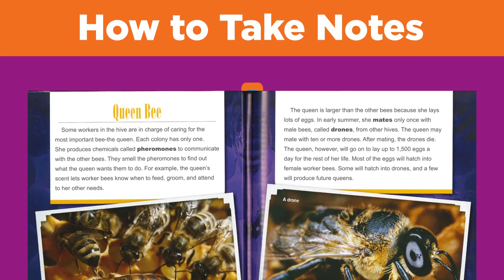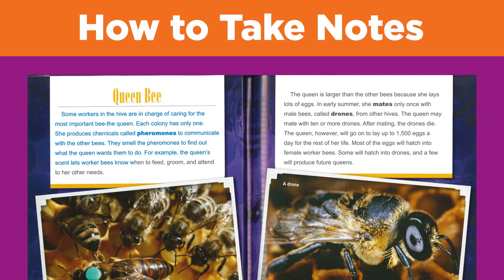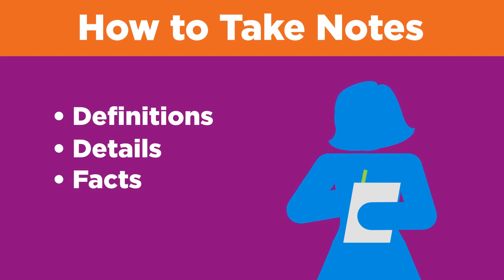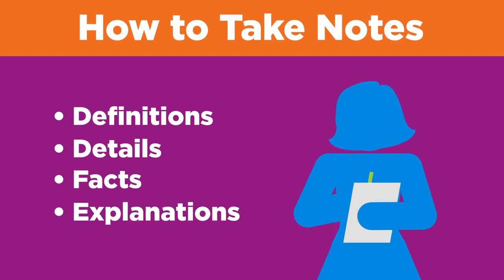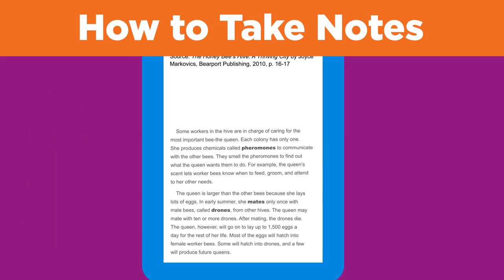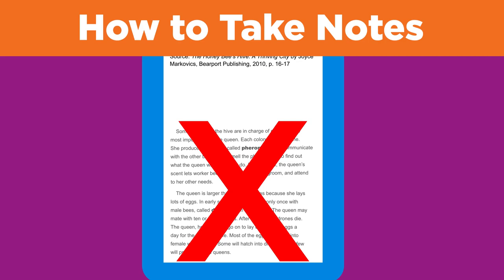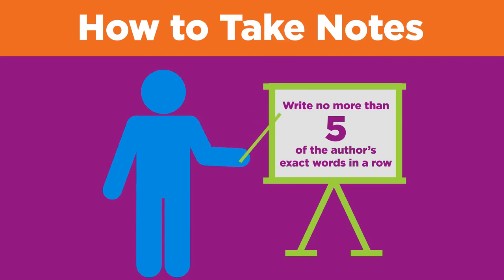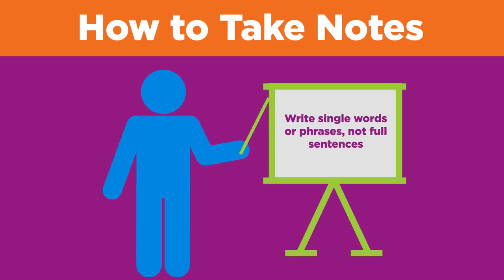Now let's start taking notes from the book. Reread the relevant section one chunk at a time, writing down the important information. But what is important? Definitions, details, facts, and explanations are examples of important information — but only if they relate to your research questions. So should you write down all of the important information word for word? Nope. You should not copy every word. Copying another person's exact words without giving credit is called plagiarism. A good rule of thumb is: do not write down more than five of the author's exact words in a row in your notes.